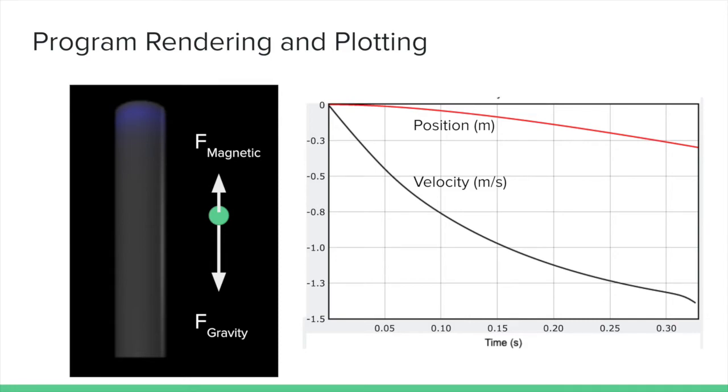Shown is the program rendering and the generated plot. The rendering confirms our setup, where the magnet starts at the top and falls downward through the tube. On the right, we see that velocity is always negative and decreasing, so the net Y force is always downward. Note that at the end, velocity decreases more than usual, since part of the magnet is hanging out of the tube.